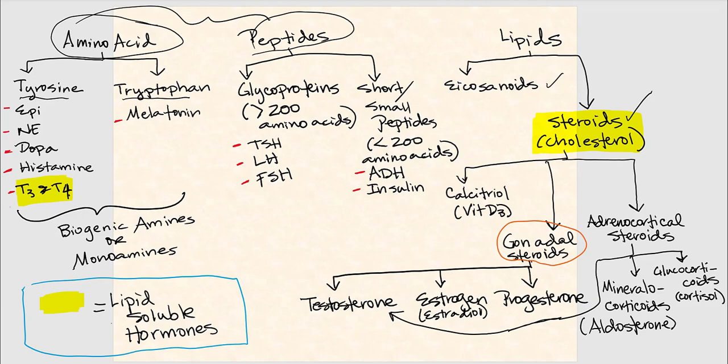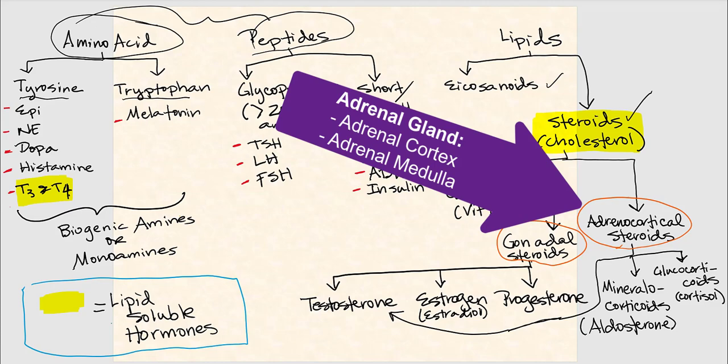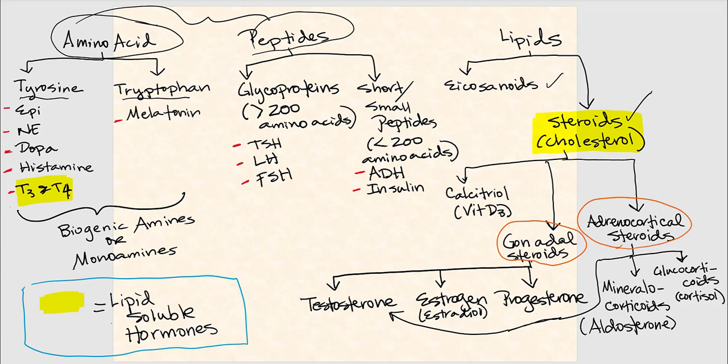Then we have adrenocortical steroids, called so because they're produced by the adrenal cortex, part of the adrenal gland. These include testosterone — so testosterone is made both in the gonads and in the adrenal cortex. Other adrenocortical steroids include mineralocorticoids such as aldosterone, and glucocorticoids such as cortisol. Please know the list of these steroids.